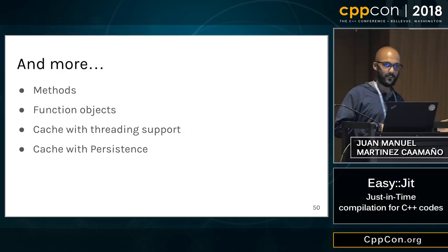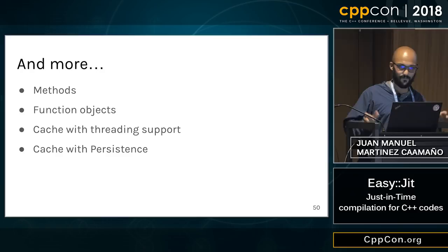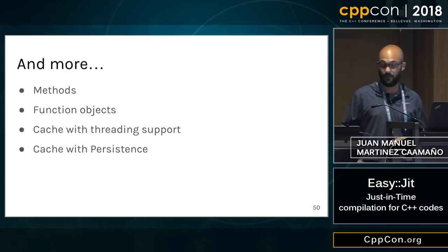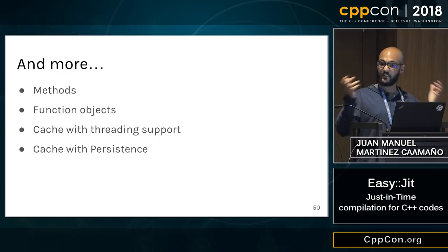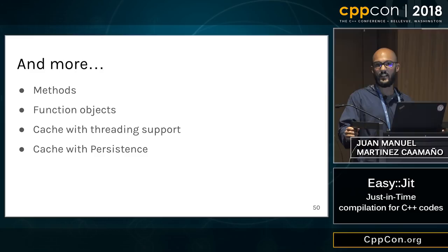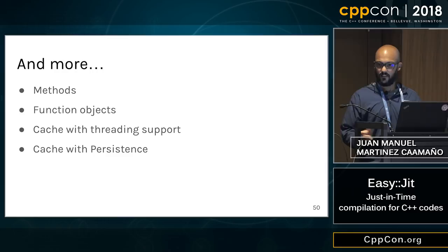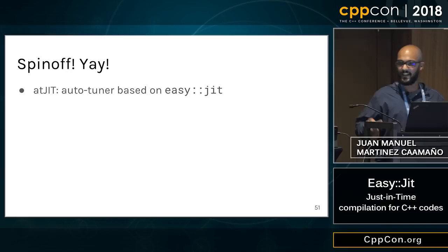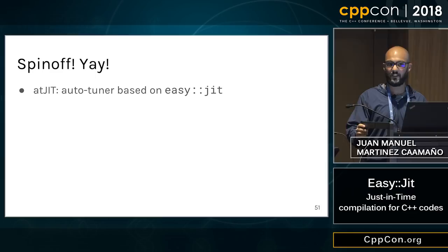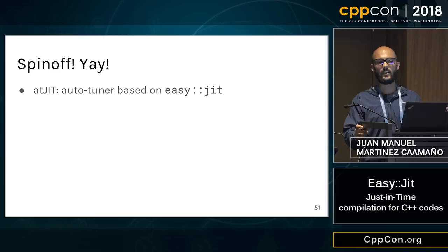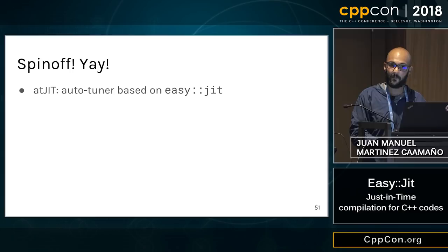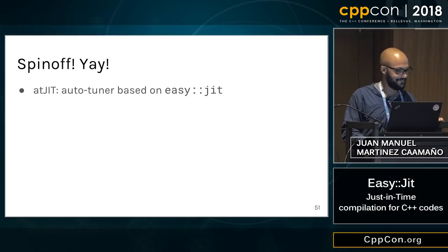There's also more to do: support for methods isn't implemented yet — not because I didn't want to, it's because I didn't find it fun — but it should be straightforward. Similarly for function objects. It would be nice to implement a threading cache or a cache that supports serialization and persistence. There's also a spin-off: one guy forked it and is using it to prototype an auto-tuner for C++, and he's presenting it in two weeks at the LLVM Developer Meeting — if you're there, go see it.